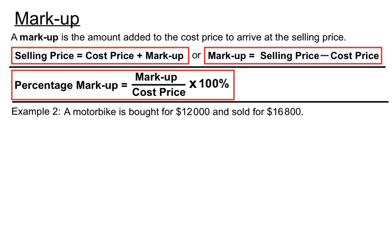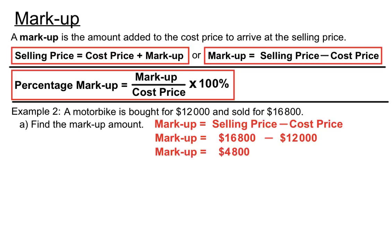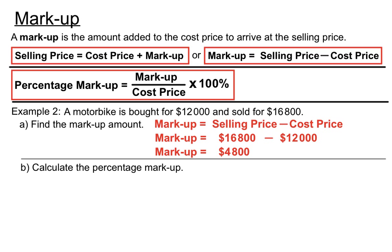Example: a motorbike is bought for $12,000 and sold for $16,800. The markup amount equals selling price minus cost price: $16,800 minus $12,000 gives a markup of $4,800. So the bike has been marked up by $4,800.